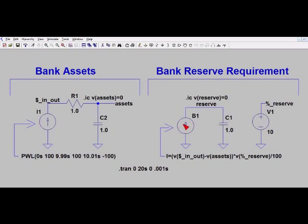So basically this current source B1 is going to take the current in resistor R1 and do a divide by 10 because it's a 10 percent requirement, and I need one tenth of the assets to be stored on C1 to represent the reserve requirement. This is the equation that controls the current in current source B1.